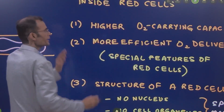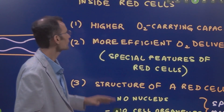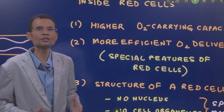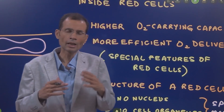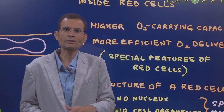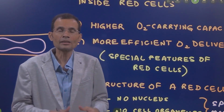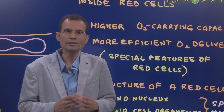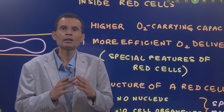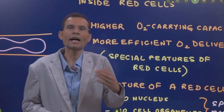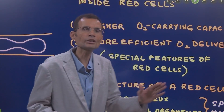The first advantage is that because hemoglobin is inside the RBCs, we have a higher oxygen carrying capacity of the blood. If it were free in the plasma, hemoglobin would still carry some amount of oxygen. But since it is inside the RBCs and RBC count is very high, it has a much higher capacity to bind and transport oxygen.